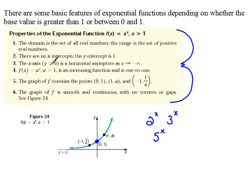The x-axis is a horizontal asymptote as x approaches negative infinity. As our x values go out here towards negative infinity, then we are following along that x-axis. That is a horizontal asymptote.